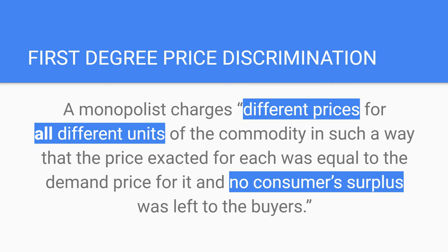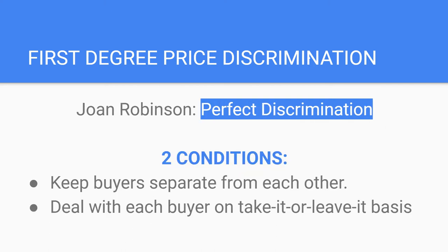Let's say that you are a monopolist — imagine that you have a mind-reading instrument and you know exactly what each buyer is willing and able to pay for your product. That would be the only way there is no consumer surplus. To have that perfect price discrimination, there are two conditions: one is that the buyers must be separate from each other, and the other is that the monopolist deals with each buyer on a take-it-or-leave-it basis.